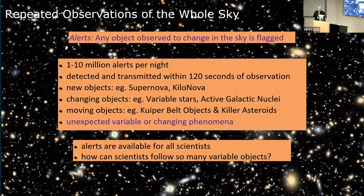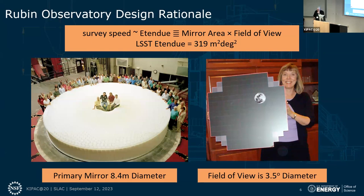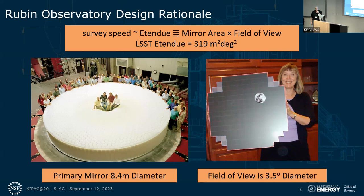Phil Marshall this morning alluded to the data problem: how do you filter this many objects that quickly at a fidelity to give you a pure sample of the kind of things you're interested in? For a survey, you want to maximize the etendue — mirror area times field of view. So you want a big light-collecting primary. Here's the famous picture of the 8.4-meter diameter primary mirror right out of the oven. Then a big field of view: three and a half degrees across. That combination is really not matched — there are 10-meter telescopes and some wide-field imagers, but nothing that has this combination.